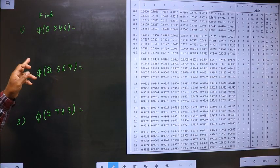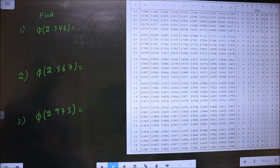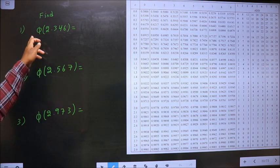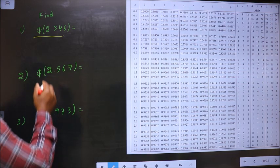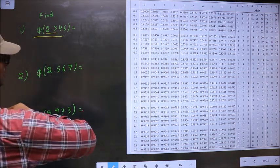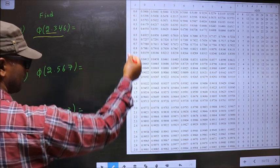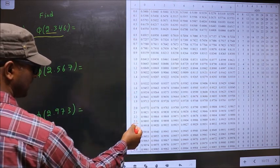Find Φ of 2.346. Here we have to find Φ of 2.346. How do we find it? First you take these two numbers, 2.3. We have 2.3 present here.